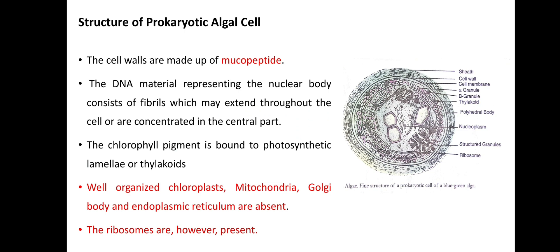First of all, the outer layer of the prokaryotic cell has a cell wall which is made up of mucopeptides. Then the DNA is not present inside a definite nucleus; it is present throughout the cytoplasm, that means it is scattered throughout the cytoplasm. Then chlorophyll pigment is bound to photosynthetic lamellae or thylakoids; it is not present in a definite chloroplast.